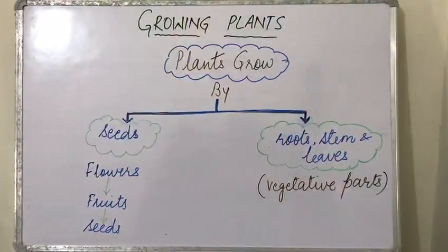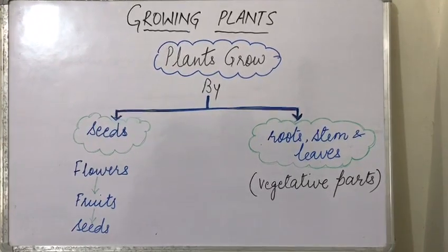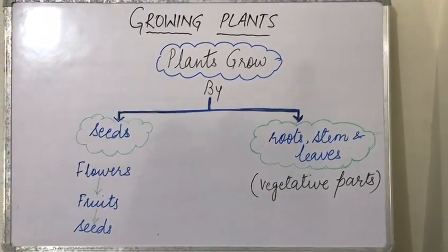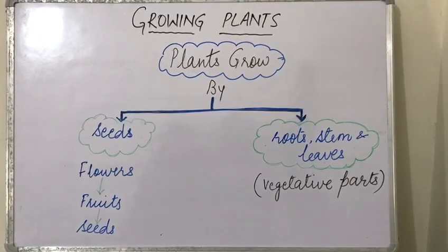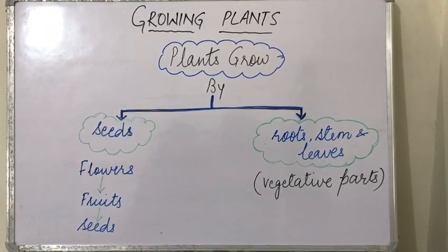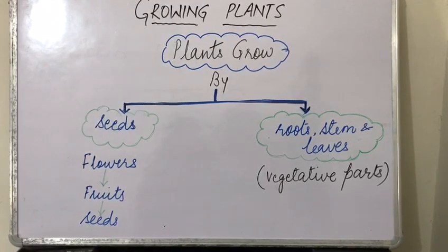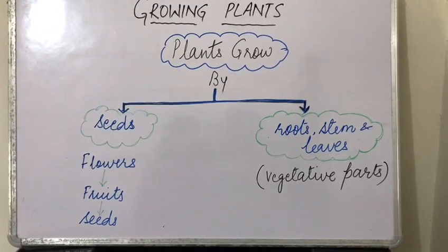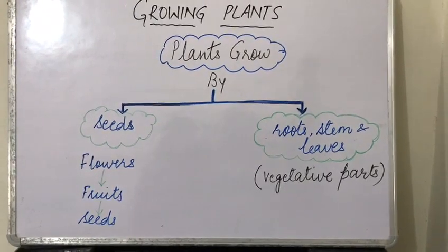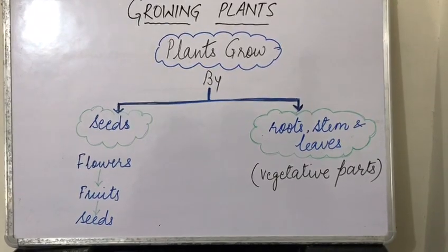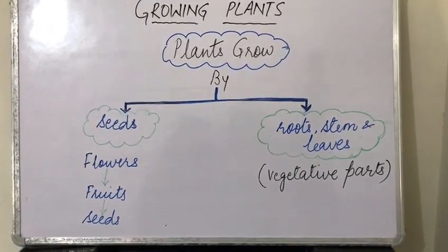We'll start with our science class 5, growing plants. The topic is growing plants and we all know that plants grow by seeds, but they also grow by vegetative parts — that are root, stem, and leaves. We'll come to that later. First we will take up seeds.